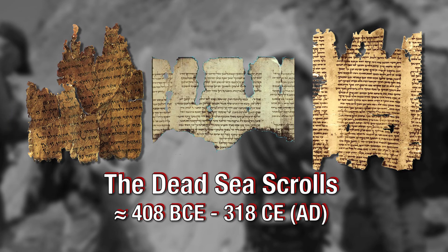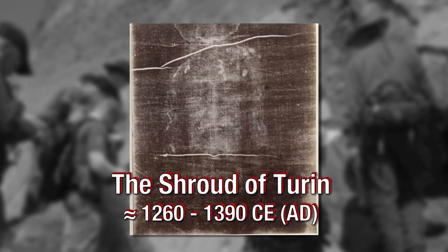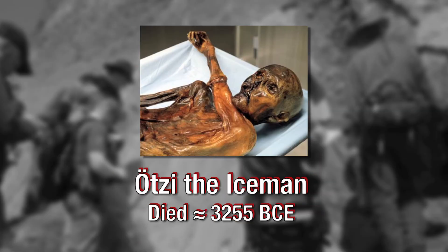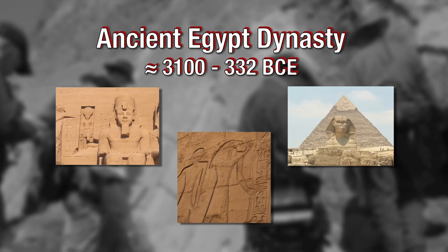Carbon dating has been used to date the Dead Sea Scrolls, the Shroud of Turin, as well as Otzi the Iceman. It has allowed us to create the chronology of ancient civilizations, such as the Egyptian dynasties.